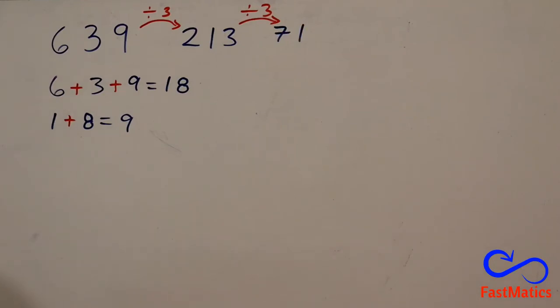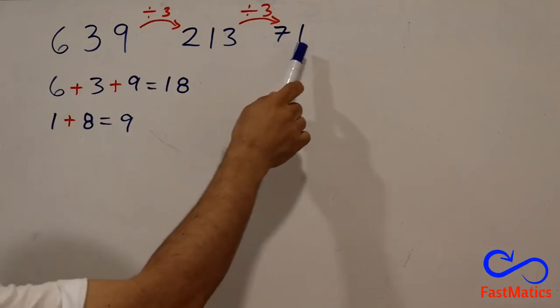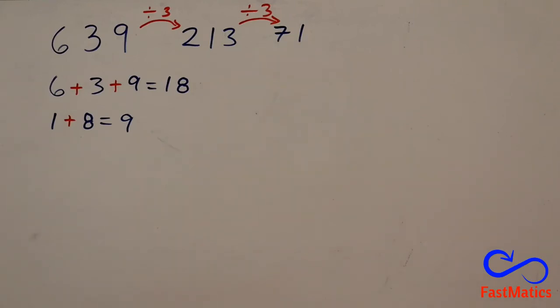I'm asking myself, is 71 divisible by 3? 7 plus 1, 8. Is 8 a result of the table of 3? No.